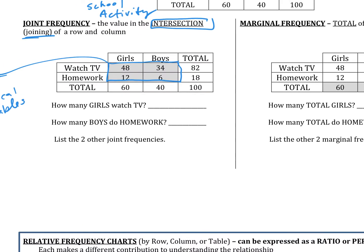So they ask: how many girls watch TV? We can see there are 48 girls who also watch TV. How many boys do homework? There are 6 boys who also do homework. Pause the video and list two other joint frequencies. The other two are: boys who watch TV, which is 34, and girls who do homework, which is 12. So those are your four joint frequencies.